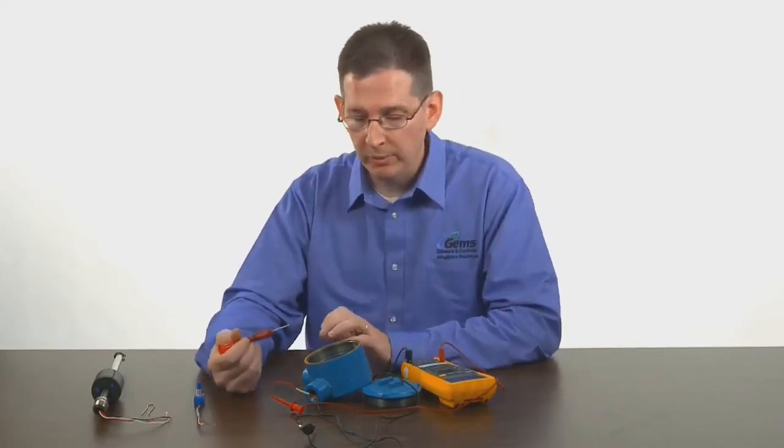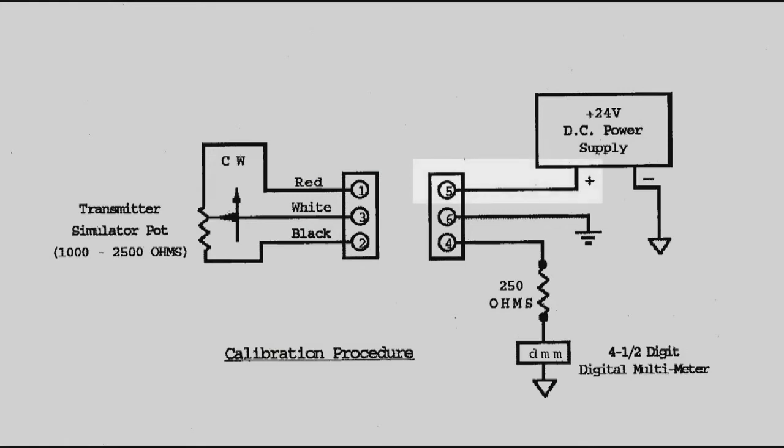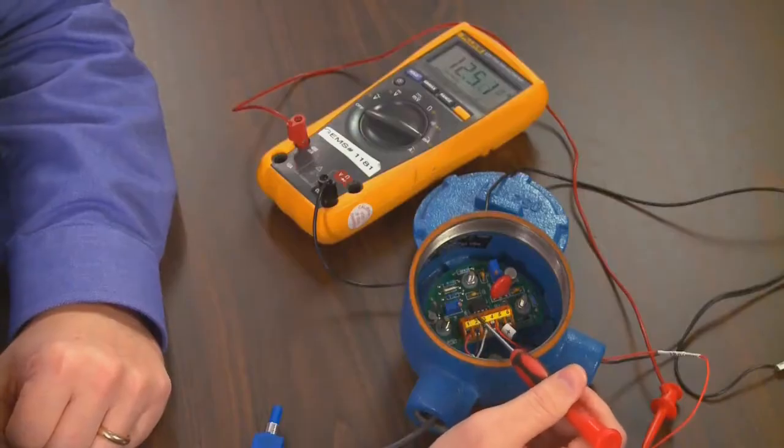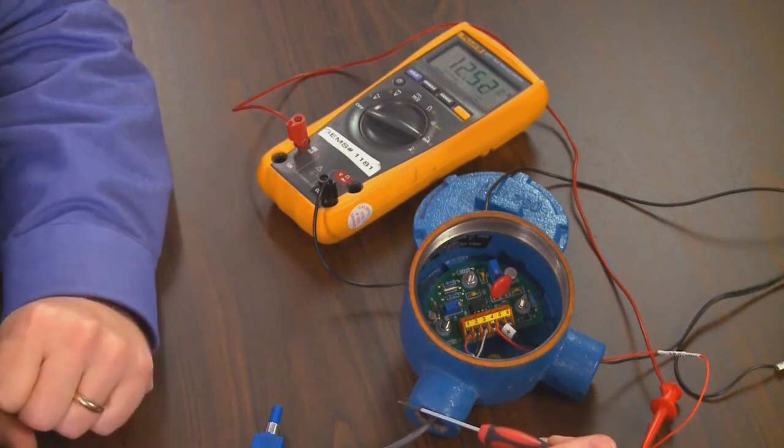To wire this up properly you'll take your 24 volt positive DC into pin 5, pin 4 will go to your multimeter, your common leg of the multimeter back to your negative leg of the DC power supply, and the potentiometer into pins 1, 2, and 3. The red into 1, black into 2, and the third will have the wiper arm or the white wire.